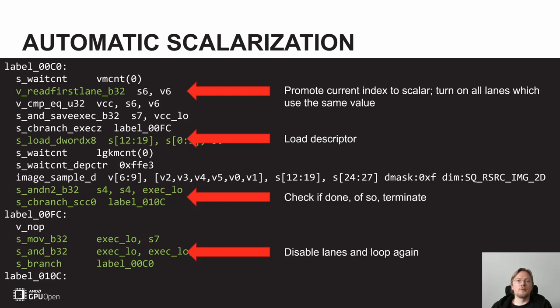The compiler can combine and split those loops as it sees fit. It's important to convey the information to the compiler so it can make the right decision, because if you scalarize yourself the compiler is unable to optimize further. If you leave freedom to the compiler, it can do things like merge two consecutive waterfall loops together and execute them more efficiently.